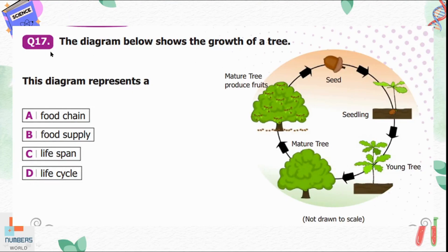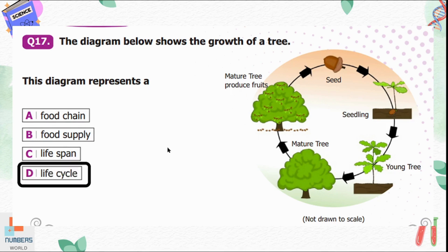Question number seventeen: the diagram below shows the growth of a tree. This diagram represents a food chain, food supply, lifespan, or life cycle. We can see a seed which turns into a seedling, then a young tree, a mature tree, and then the mature tree produces fruits. This is the life cycle of a tree, so life cycle is the correct answer.